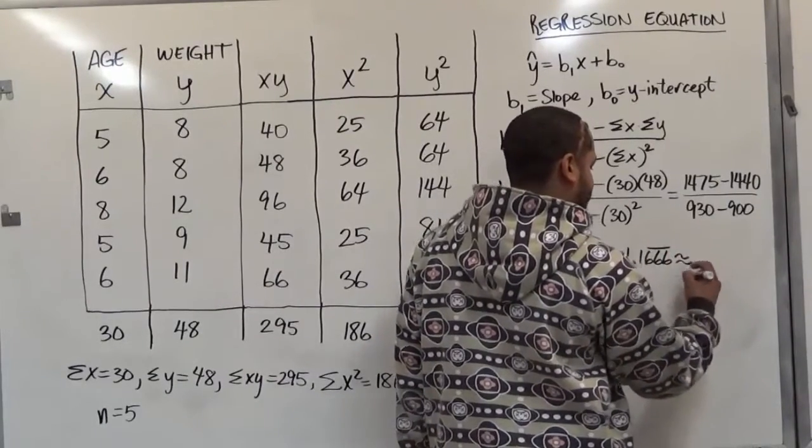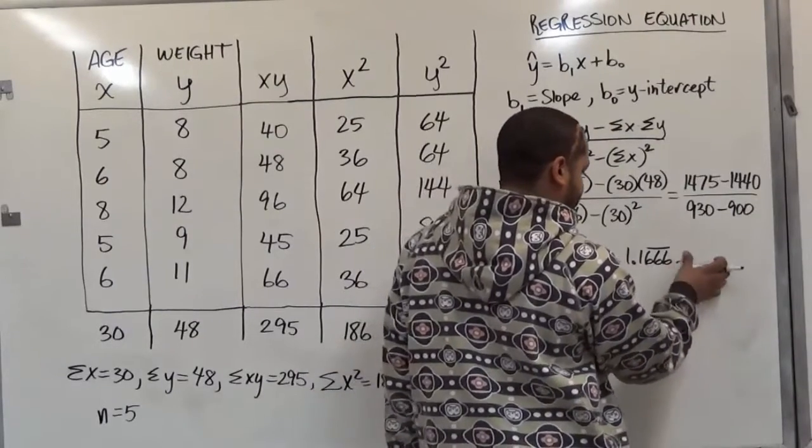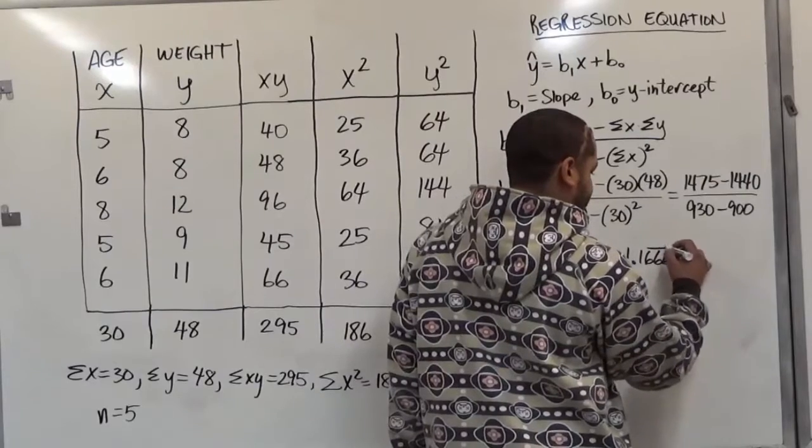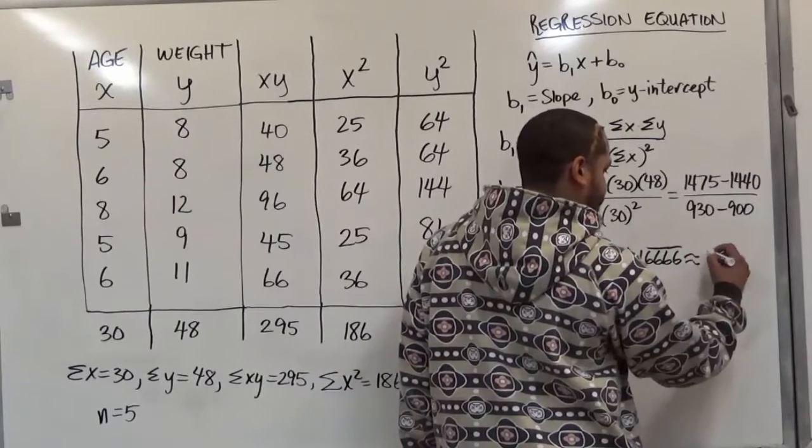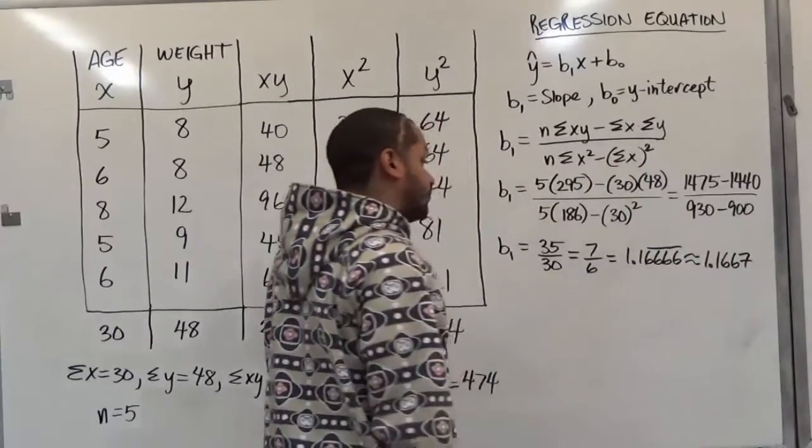This will become 1.1666 continuing. We're going to round up to the fourth place. As this continually goes to 666, this last 6 will become a 7. Because as this continues forever to get a four-digit number, we need this to be 1.1667. So there we have our slope.